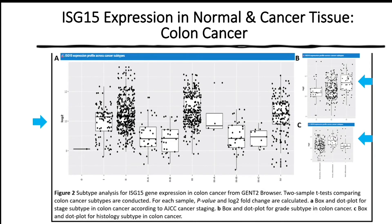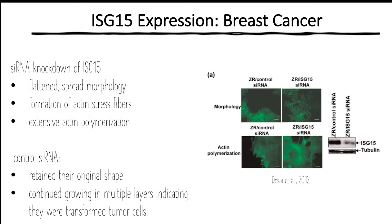A study conducted in 2012 found that silencing RNA knockdown of ISG15 expression in breast cancer cells resulted in flattened spread morphology as well as the formation of actin stress fibers and extensive actin polymerization. Whereas breast cancer cells treated with control silencing RNA retained their original shape and continued growing in multiple layers, indicating they were transformed tumor cells. This further suggests a pro-tumor function of ISG15 expression.